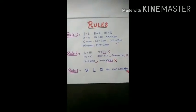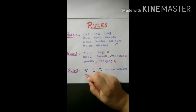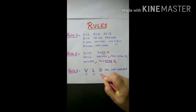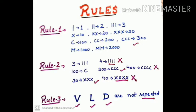Now, the third rule. V, L and D cannot be repeated. So, students, these are the three rules of Roman numerals. Now, I will tell you rule number 4 and 5.